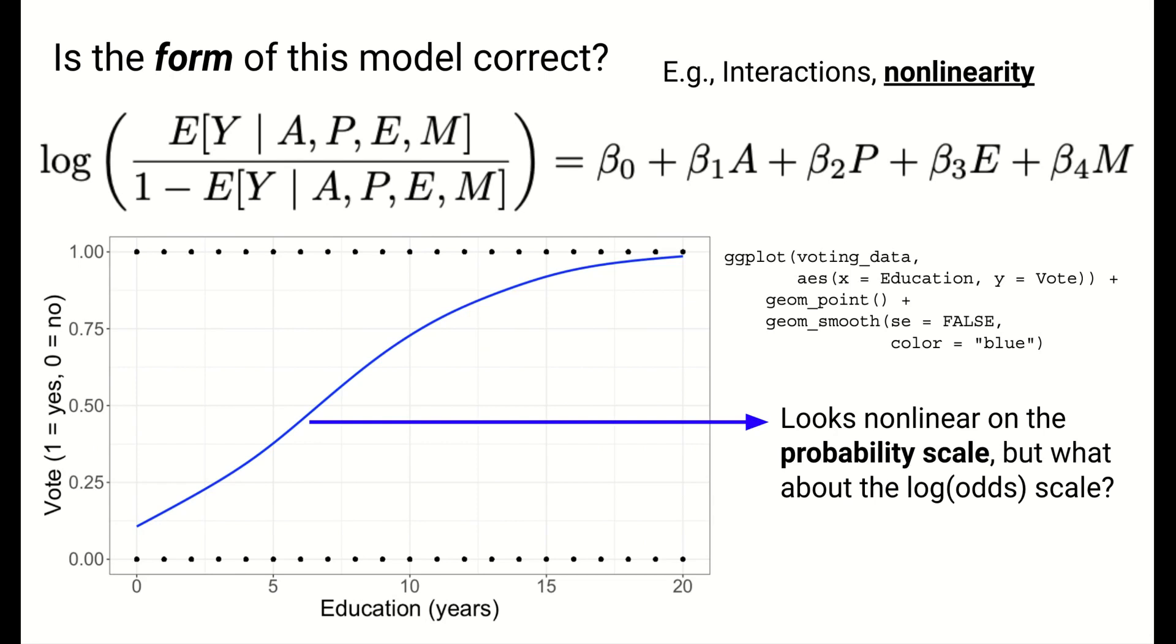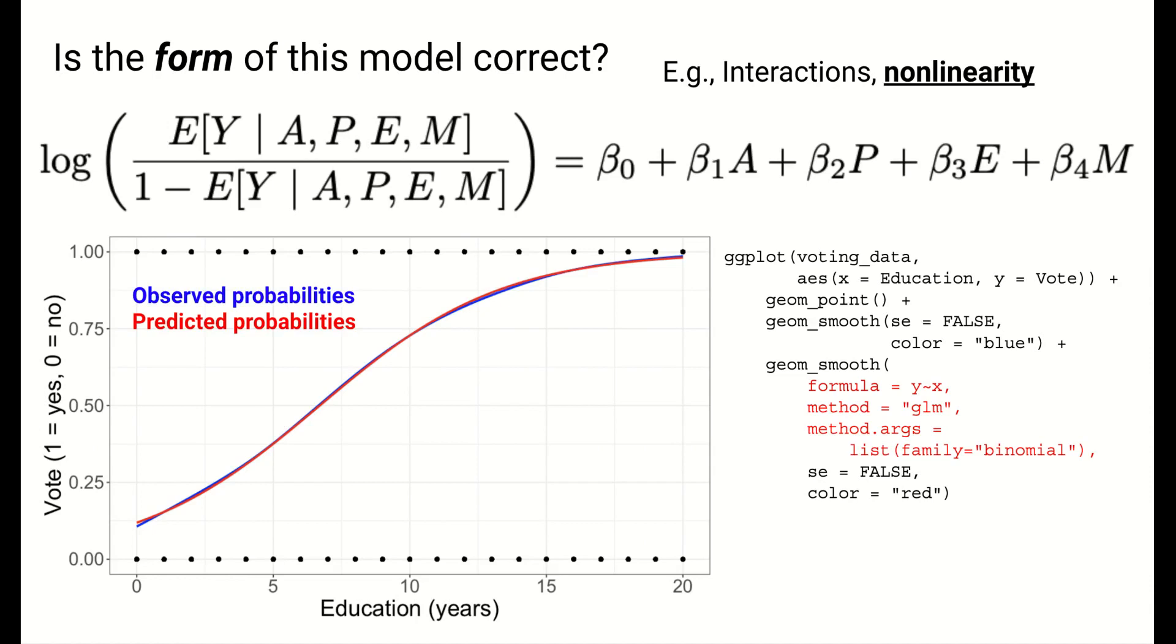So this blue smooth certainly looks nonlinear, but remember that the y-axis of this plot is on the probability scale, rather than the log odds scale. So it's not clear from just this whether the relationship between voting and education should be nonlinear in the logistic regression model. We can add the predictions from a model with a linear relationship using another ggplot smoothing layer. Don't worry too much about this code for the moment, but note that aspects of it are very similar to how logistic regression models are fit in R, namely the GLM and the family equals binomial parts. The formula y-x indicates to R that we want to see the predictions from a logistic regression model where the predictor variable has a linear relationship with the outcome. The fact that the predictions in red line up very well with the observed probabilities in blue means that a model with education having a linear relationship with the log odds of voting works well in this case. Let's see an example where nonlinearity would be a better fit.